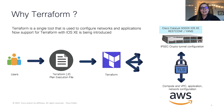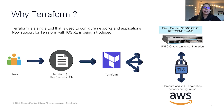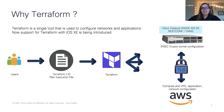And this is a virtual private cloud, the VPC network. So we use Terraform to configure an IPsec crypto tunnel between the Cisco Catalyst 9000 and the AWS VPC. We can also provision additional resources within the cloud and on our Cisco device, all at the same time.